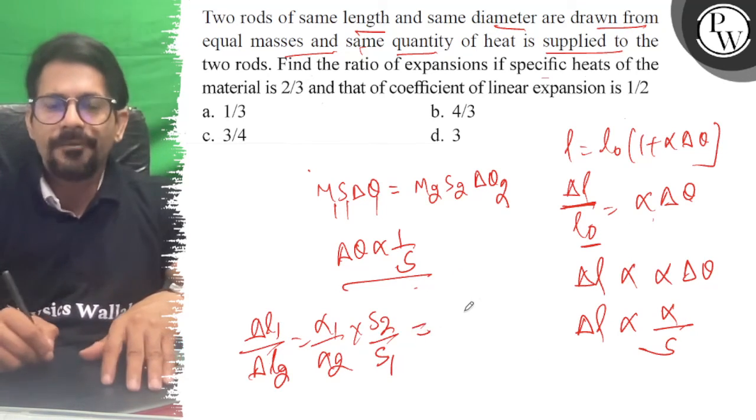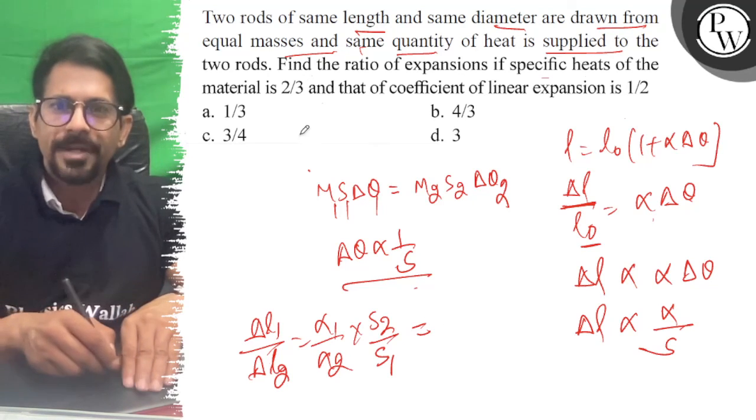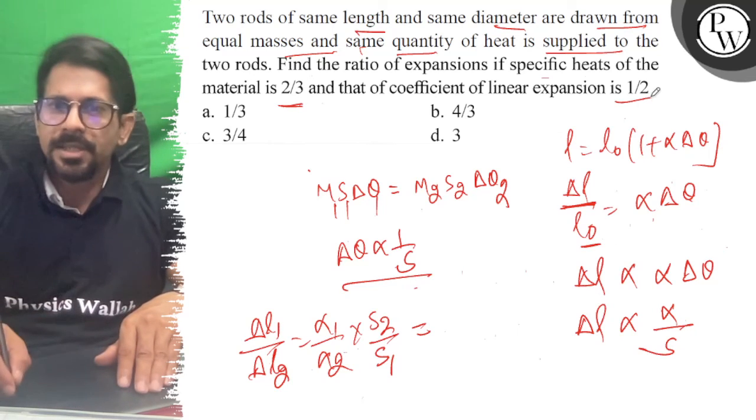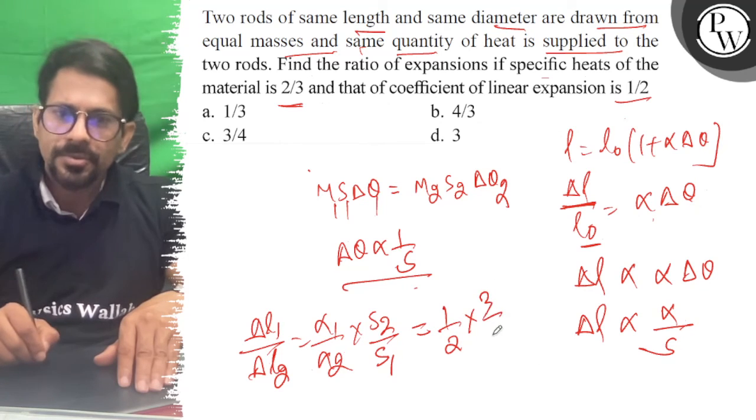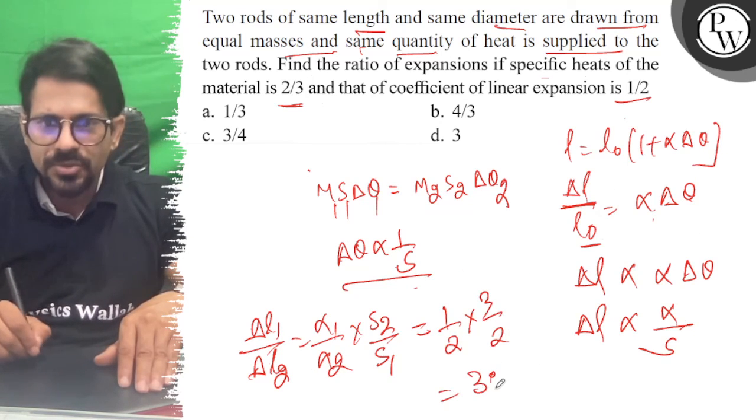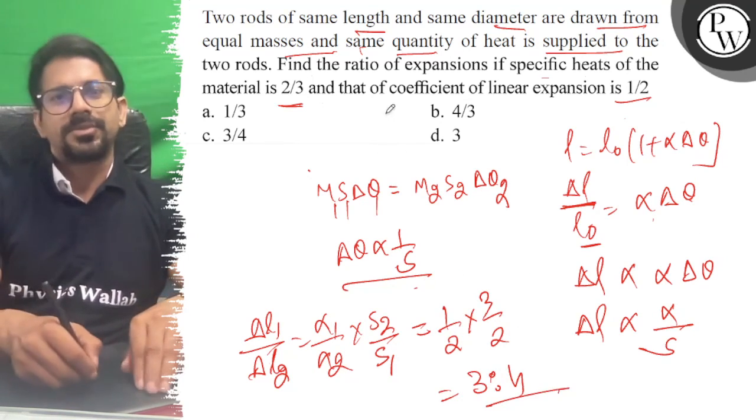Considering the given ratios, alpha 1 upon alpha 2 is 1 by 2 and s2 upon s1 is 3 by 2, so we get 3 by 4 as the ratio.